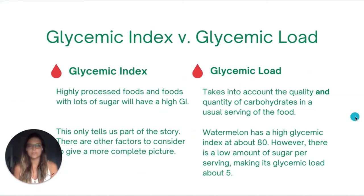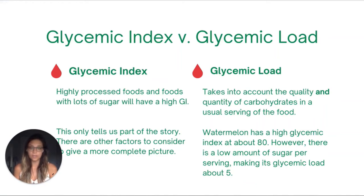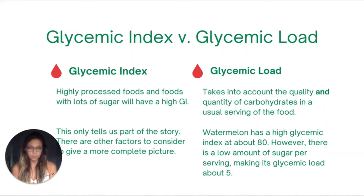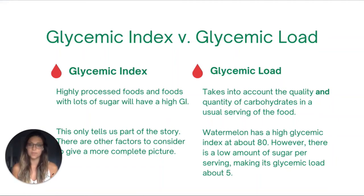Now let's talk a little bit more about glycemic index. Foods that are highly processed or have a lot of sugar will have a high glycemic index, but this only tells us part of the story. This is where the concept of glycemic load comes into play — glycemic load takes into account the quality and quantity of carbohydrates in a usual serving of a particular food. For example, watermelon has a pretty high glycemic index at about 80, but all that sugar isn't actually available to be broken down because of the presence of fiber, making its glycemic load a really low number — just five.